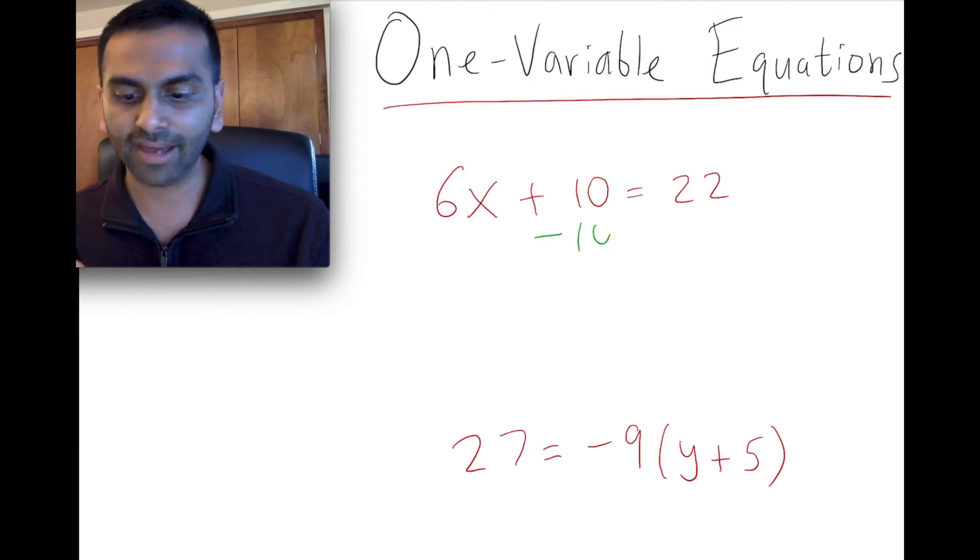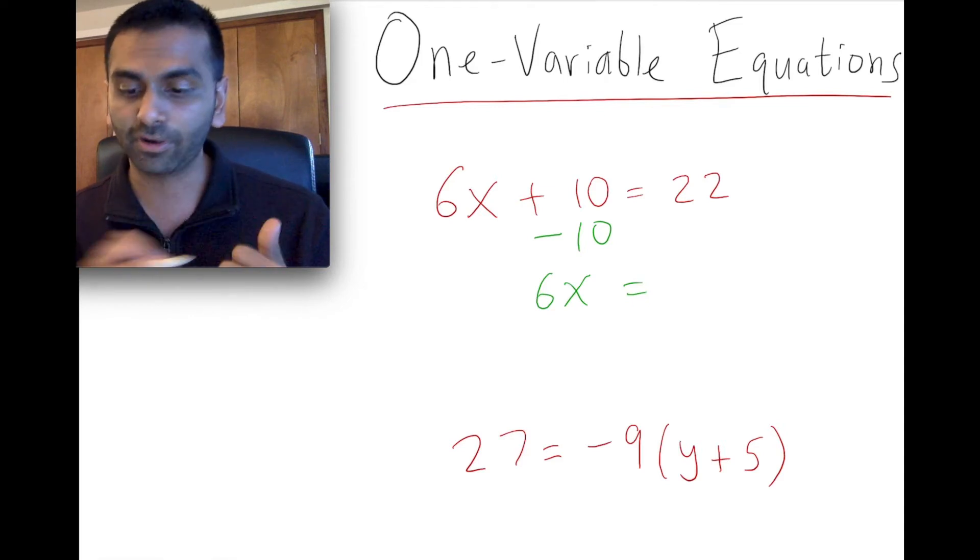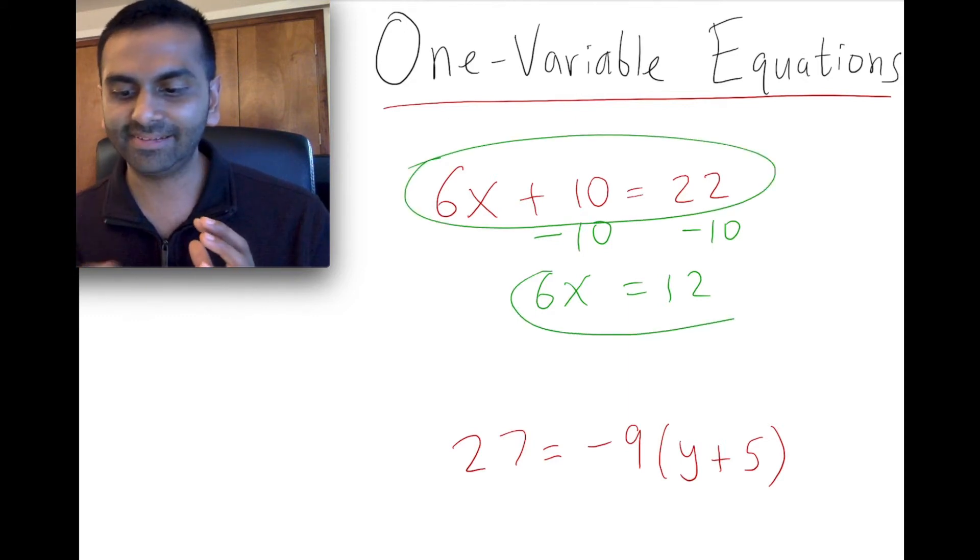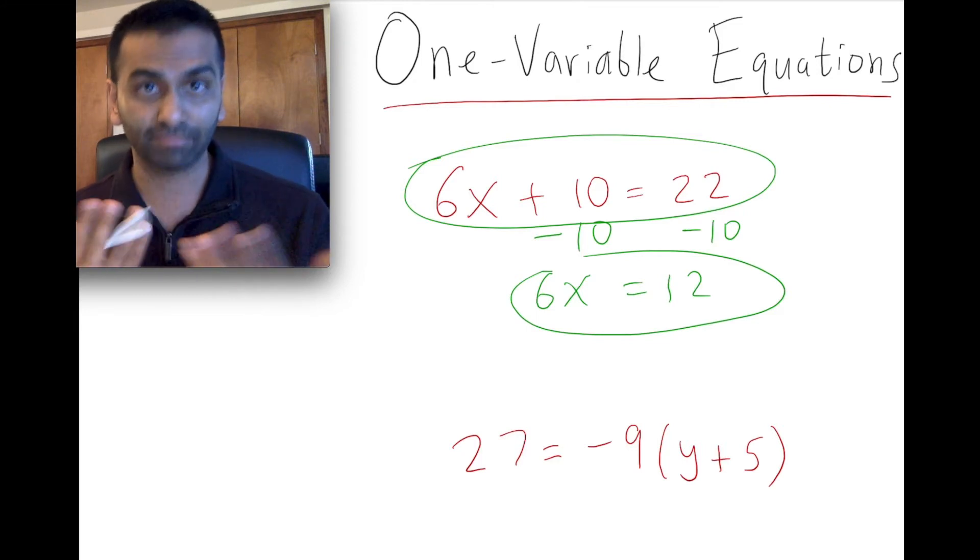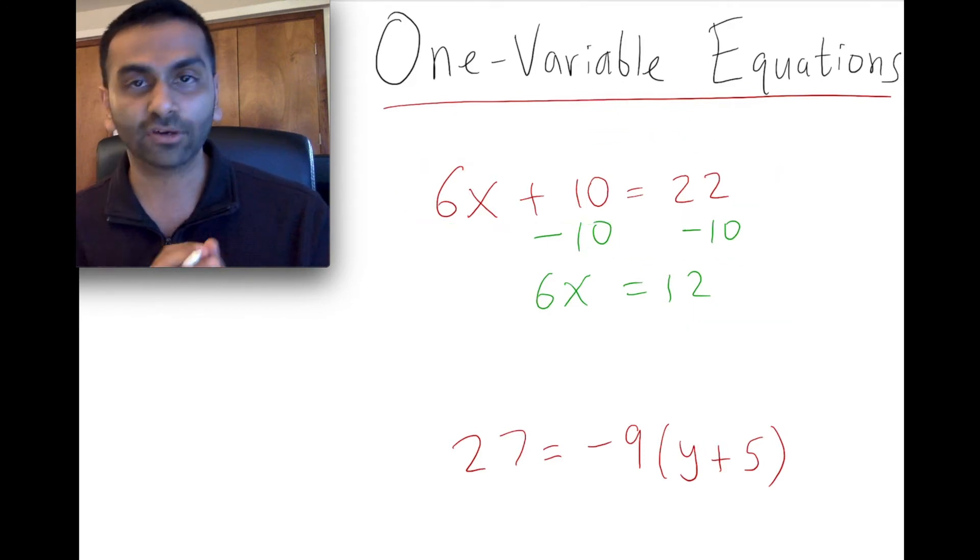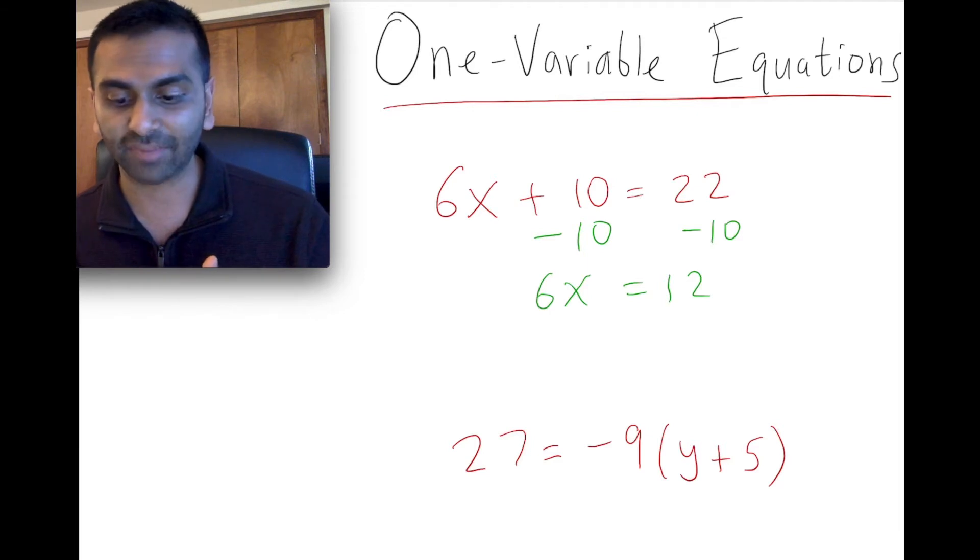So if I subtract 10 from this whole side, then 6x plus 10 minus the 10, you'll be left with just a 6x. But in order to do that, I also got to do the same exact thing to the other side. So 22 minus 10 gives me 12. This equation, to a mathematician, is the exact same object as this other equation. They're basically showing that these two sides are balanced, and here these two sides are balanced.